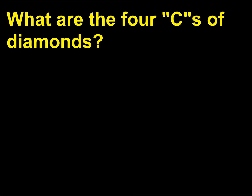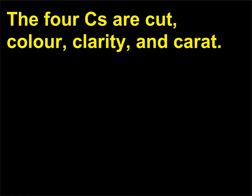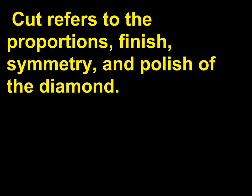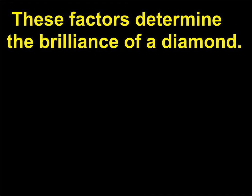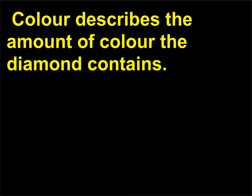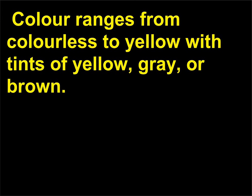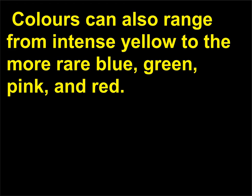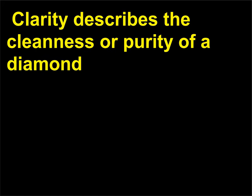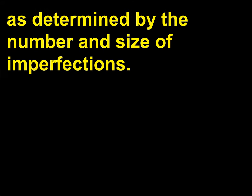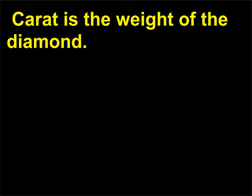What are the 4 Cs of diamonds? The 4 Cs are cut, color, clarity, and carat. Cut refers to the proportions, finish, symmetry, and polish of the diamond — these factors determine the brilliance of a diamond. Color describes the amount of color the diamond contains, ranging from colorless to yellow with tints of yellow, gray, or brown; colors can also range from intense yellow to the more rare blue, green, pink, and red. Clarity describes the cleanness or purity of a diamond, as determined by the number and size of imperfections. Carat is the weight of the diamond.